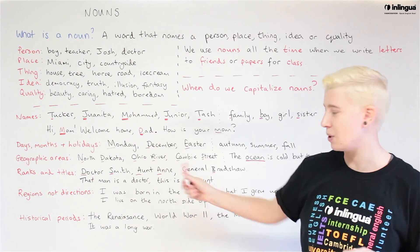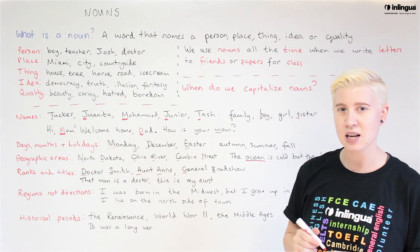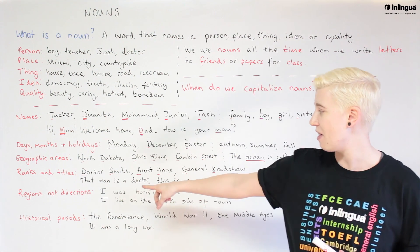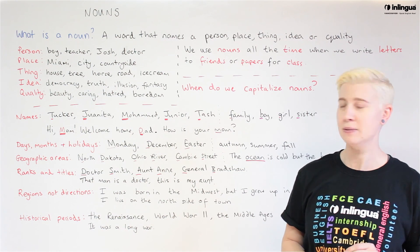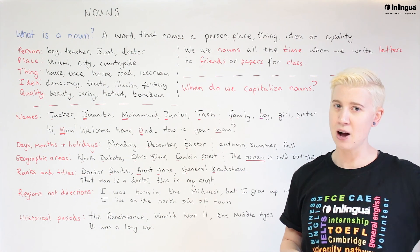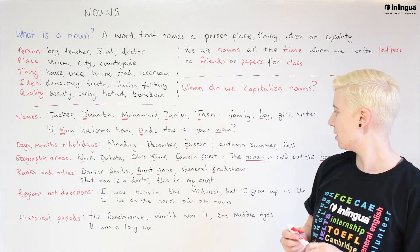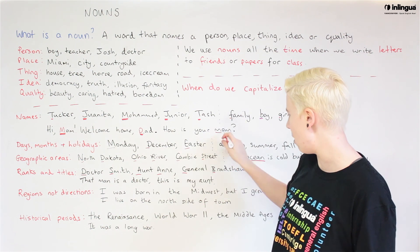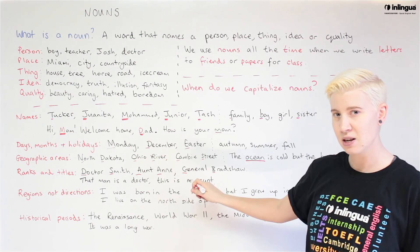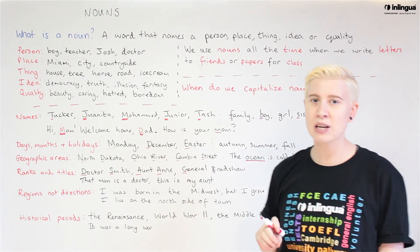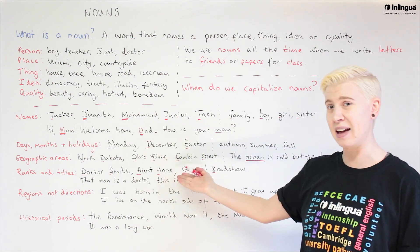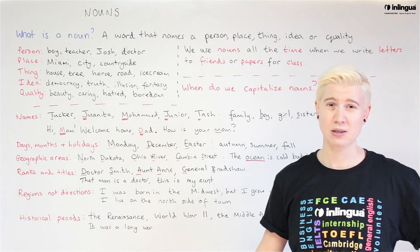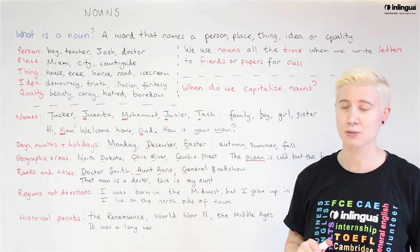Here's a sample sentence so you can see these words without capitals. 'That man is a doctor. This is my aunt.' Similar to when we were talking about your mom — 'This is my aunt' is not using it as a title. 'Aunt Anne' is her name; 'my aunt' is my relation to her. So we don't need a capital.